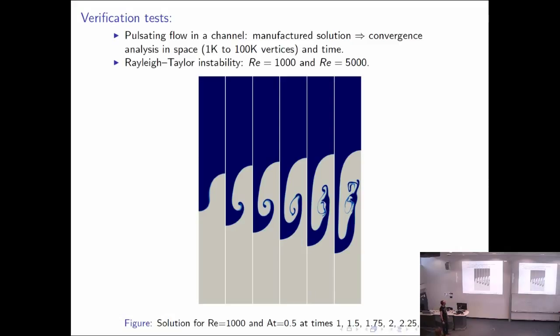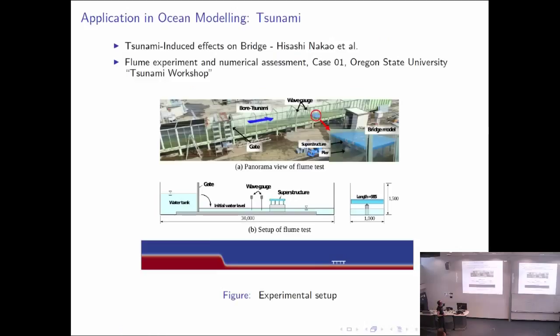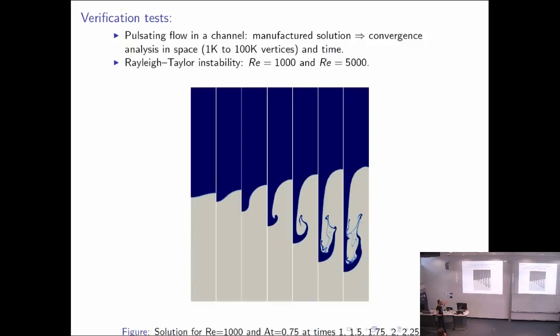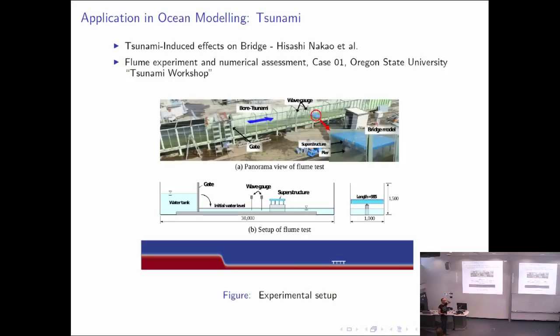We followed the usual methodology: first, some manufactured solution for pulsating flow in a channel, then Rayleigh-Taylor instability for different Reynolds numbers and different Atwood numbers, the Atwood number being the relative density difference between the two fluids. Heavy fluid on top and lighter fluid at bottom. For this test case, we have no-slip boundary at the top and bottom and perfect slip on the sides. We showed that there's good agreement with numerical experiments aside from the pattern of the rolls, but that's something also noted by Guermond in his paper.